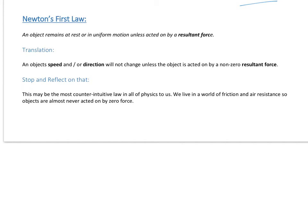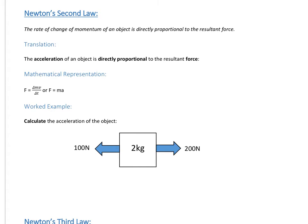Newton's second law is probably his most famous law. The proper definition: the rate of change of momentum of an object is directly proportional to the resultant force. As long as something has a constant mass, we can simplify that to say the acceleration is directly proportional to the resultant force, expressed as F equals MA. The proper form is the change in momentum over change in time, but F equals MA is the form you'll mostly use at this level.